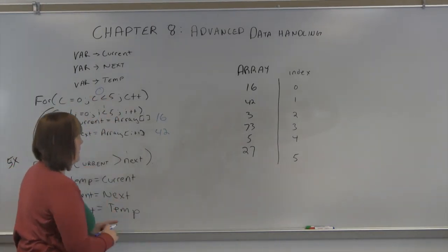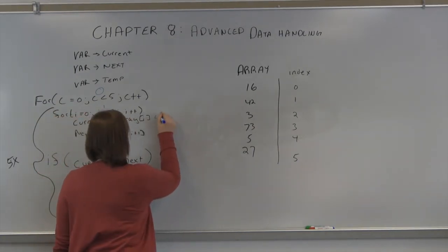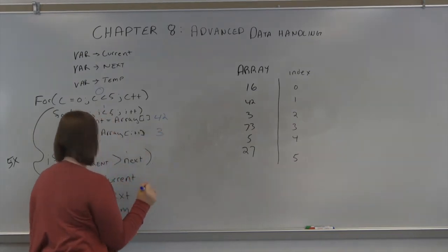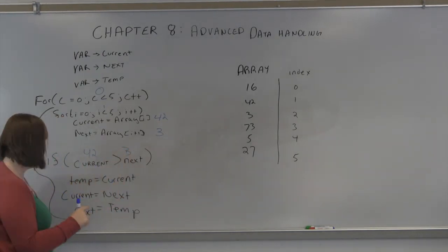So i equals one. So that makes current equal to 42. Next equal to 3. And now 42 is greater than 3. So we execute what's in the for loop. So temp, which is going to hold the current value, becomes 42.